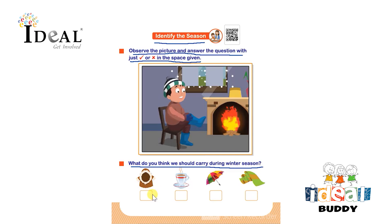What do you think we should carry during winter season? The first one is woolen wear — the child will put a tick mark. Next is hot tea or coffee — the child has to put a tick mark here also. Next is an umbrella — we don't need an umbrella, so you have to tell the child. And the last one is a quilt — the child will put a tick mark, as in winter it is very cold and they will need a quilt for warmth.